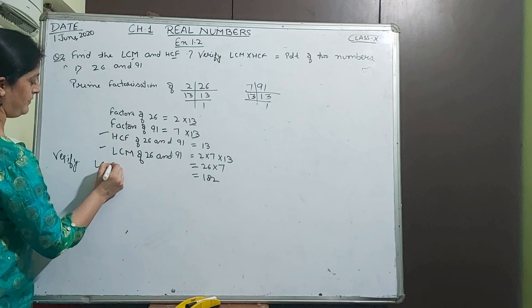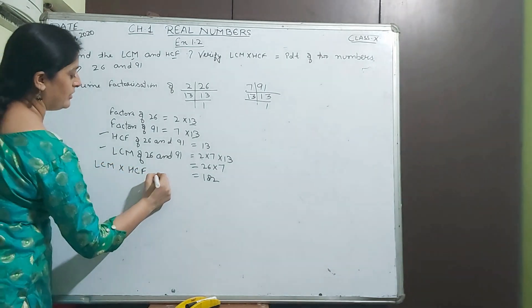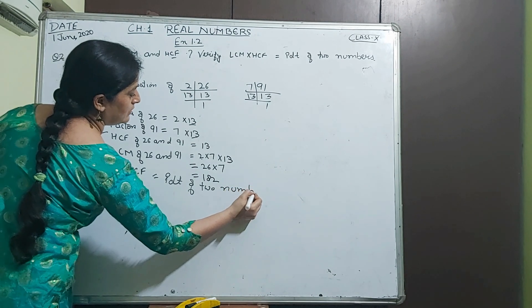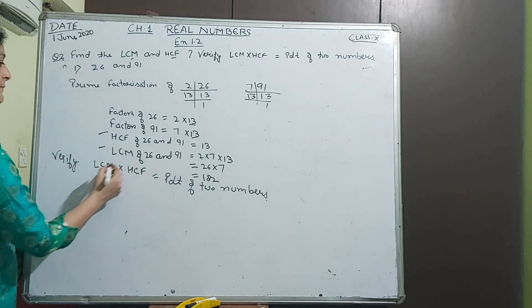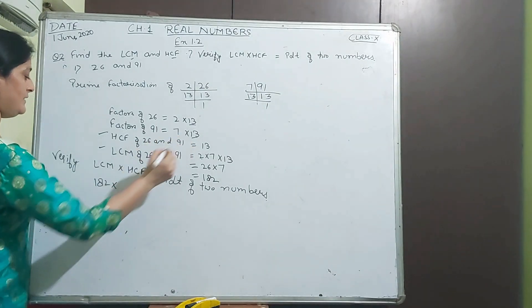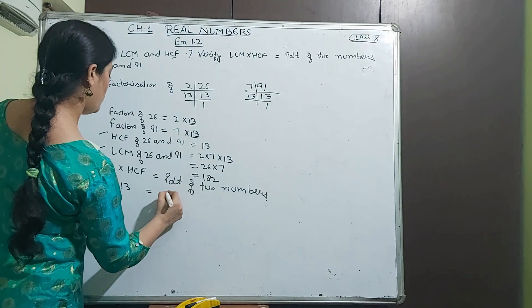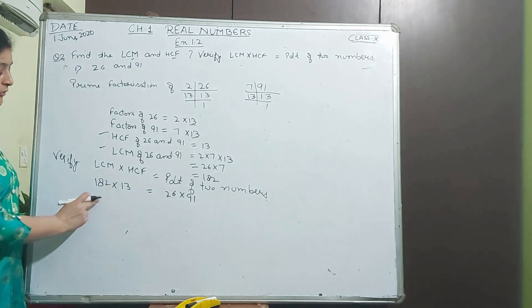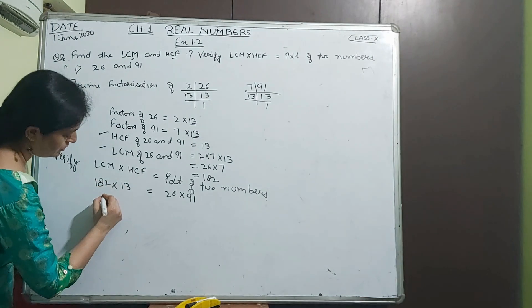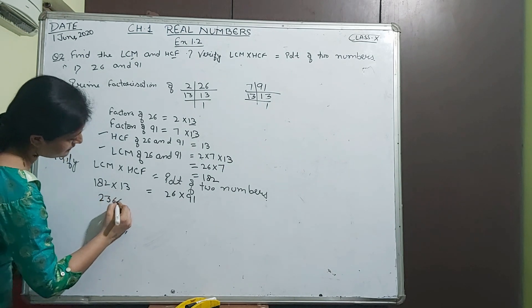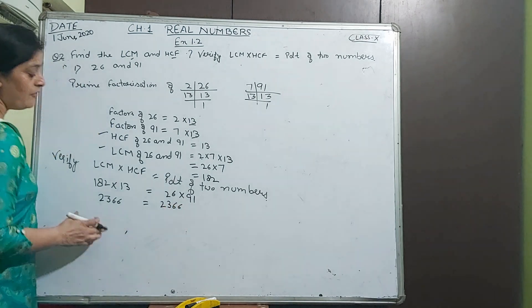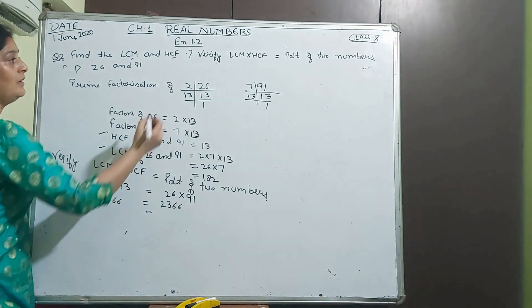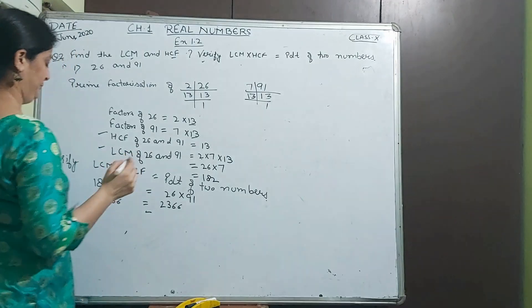Next we find the LCM and HCF. The number which is common in both is the HCF. HCF of 26 and 91 is 13. LCM of 26 and 91: the factors are 2, 7, and 13. 13 times 2 is 26, times 7 is 182. This is the LCM. Next we verify LCM into HCF is the product of two numbers.